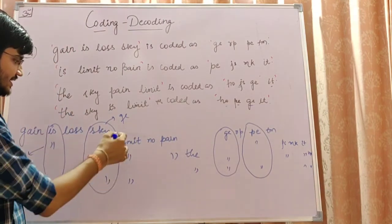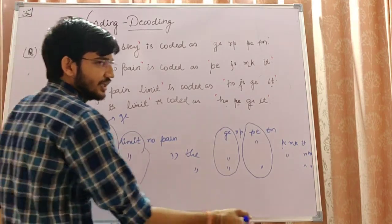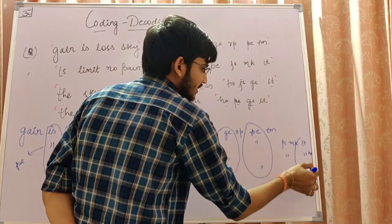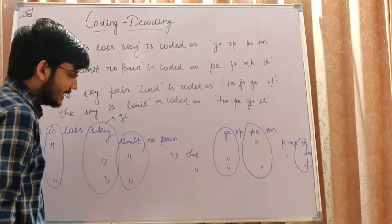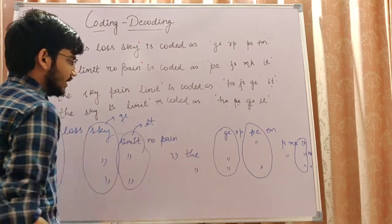Next, limit. Second, third and fourth. Common is limit. So what is common in second, third and fourth codes? Limit is coded as IT.